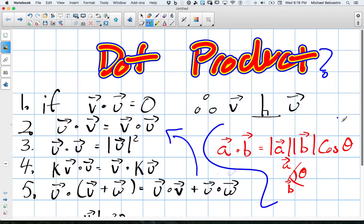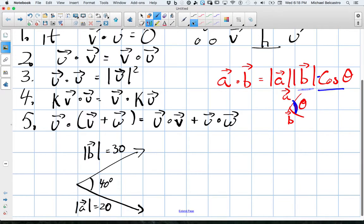This is your dot product here. Dot product of vector a dot b is equal to the magnitude of a times the magnitude of b times cos theta, and theta is the angle between the two vectors that are intersecting each other. So we have an example here. Here we are, example one.